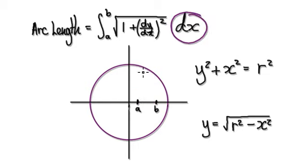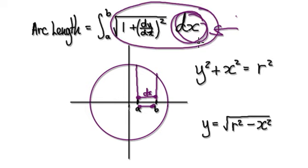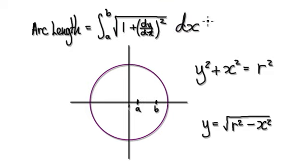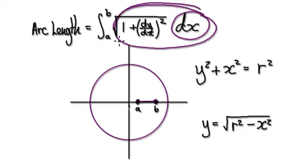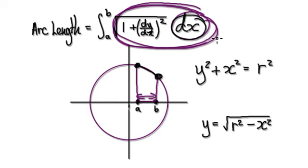Let's just look at this dx. Imagine that this distance here is dx — dx is never this big, but let's just imagine. So if you have a dx distance and you combine it with this thing here, this thing here will represent the arc length. So dx here is really this x distance here, and then collectively this thing here would represent the arc length.